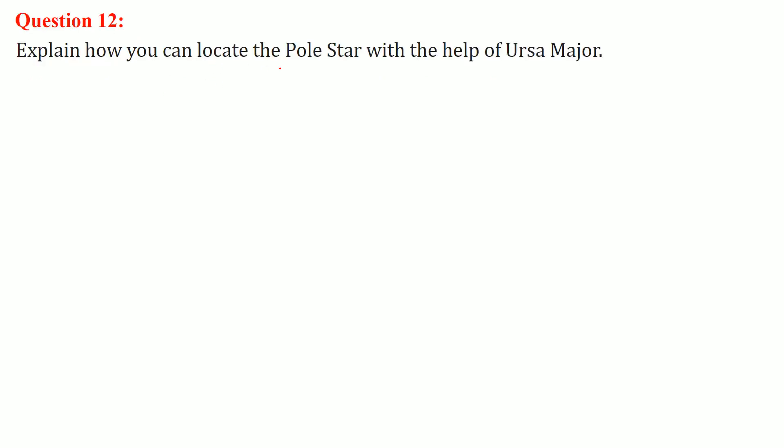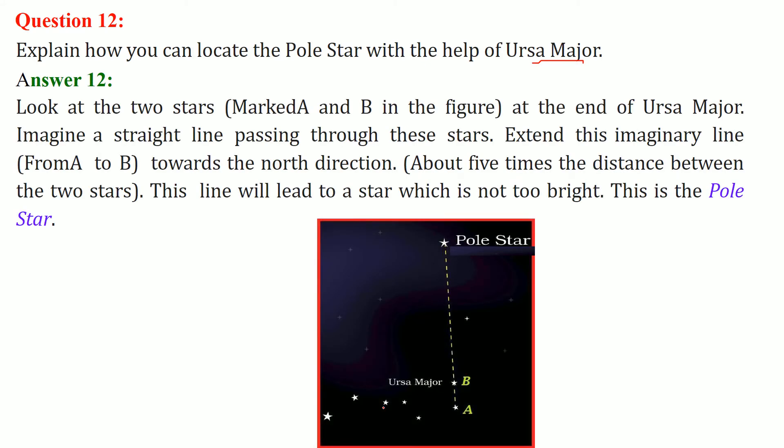Explain how you can locate the pole star with the help of Ursa Major. This is your Ursa Major. Now we have this A and B, the end ones. These are two stars. Just join them and extend them to five times. If this is x, this length should be 5x. You have to extend this imaginary line from A to B towards the north direction, around five times. The line will lead to the star which is not too bright, and this is known as the pole star.